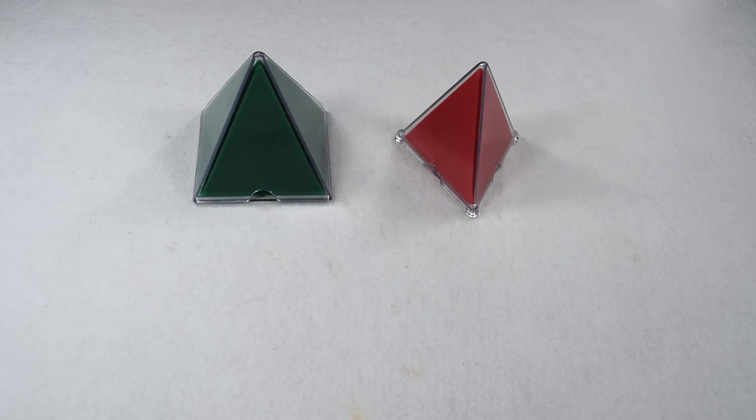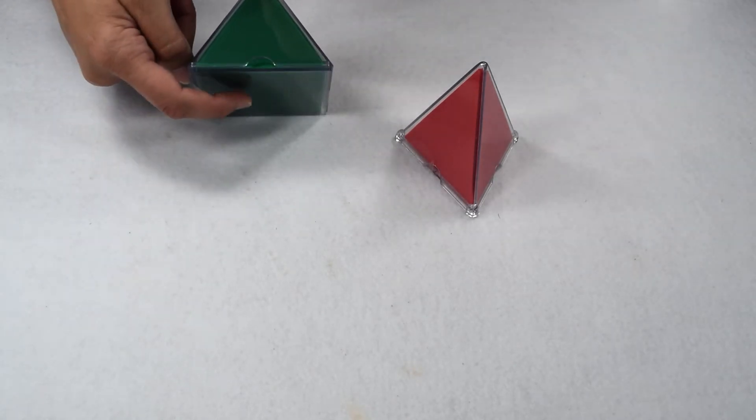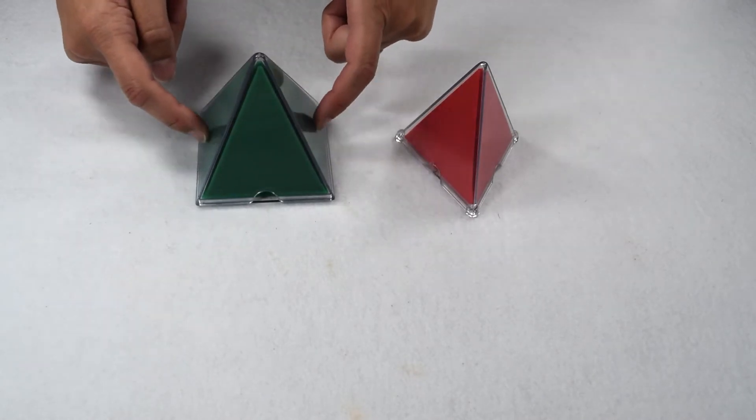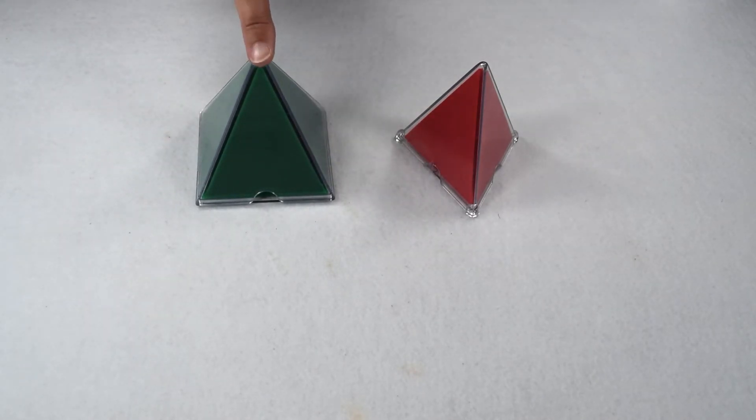Pyramids are named by their bases followed by the word pyramid. This figure has a square for a base, and it has four triangles connected to that base that meet at a common vertex. Therefore, this would be a square pyramid.